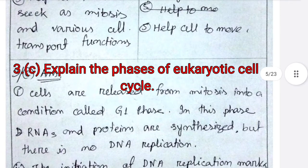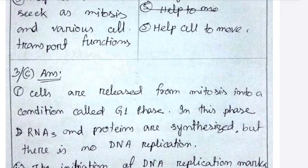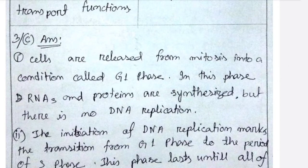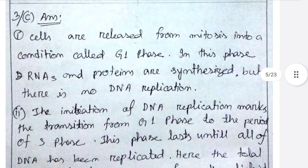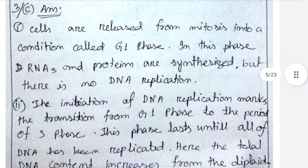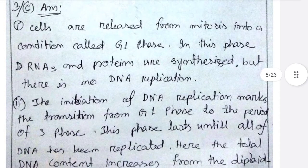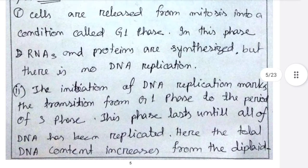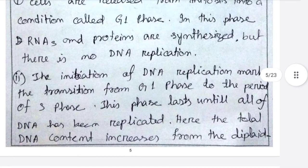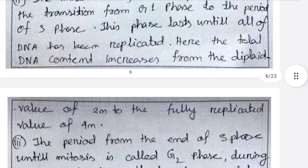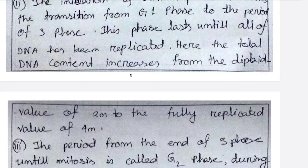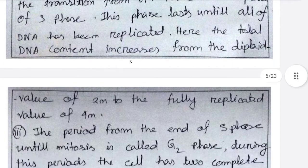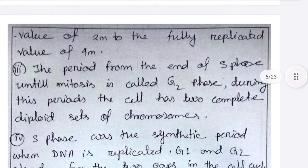Next: explain the phases of the eukaryotic cell cycle. Cells are released from mitosis into a condition called G1 phase. In this phase, RNA and proteins are synthesized but there is no DNA replication. The initiation of DNA replication marks the transition from G1 phase to the S phase. This phase lasts until all of the DNA has been replicated, and the total DNA content increases from the diploid value of 2n to the fully replicated value of 4n. The period from the end of S phase until mitosis is called G2 phase.